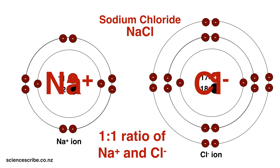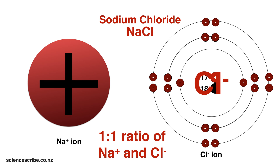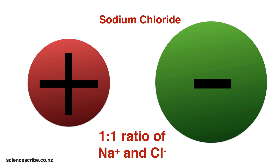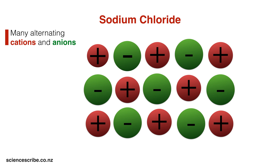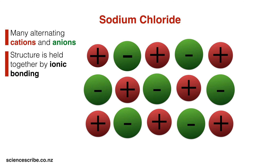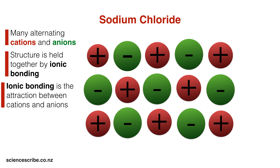For this next part of the video, I'm going to represent my sodium plus ions as a single positively charged sphere and my chloride ions as a negatively charged sphere. Sodium chloride isn't made of just one sodium plus and one chloride minus ion — it's made of several of them, heaps of these in an alternating pattern. Remember that sodium plus is a cation because it's positively charged and chloride is an anion because it's negatively charged. This entire structure is held together by ionic bonding, which is just the attraction between all those positive ions and all those negative ions.